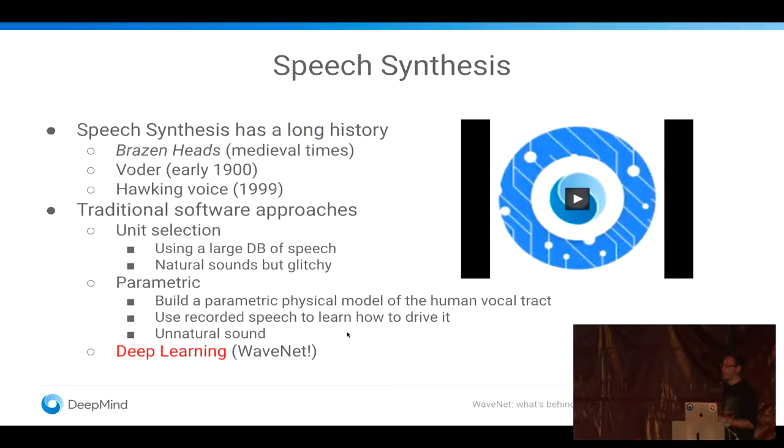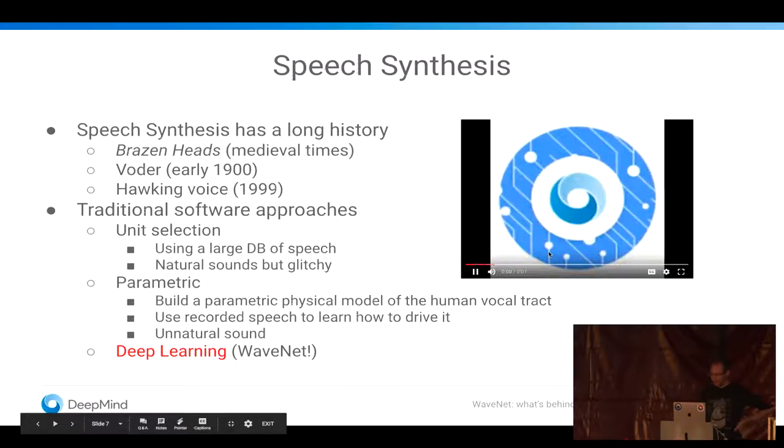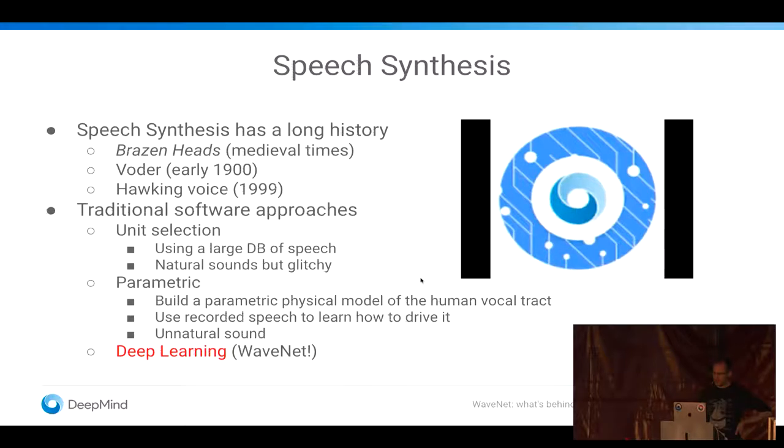And only recently, deep learning has come prominently as a technique to actually take the best of both worlds, because we learn a system end-to-end to manipulate and generate the audio from the samples themselves. And this is an example of the same sentence generated with WaveNet, and we're going to look at what WaveNet is. The avocado is a pear-shaped fruit with leathery skin, smooth edible flesh and a large stone.